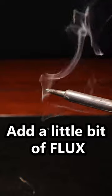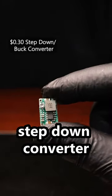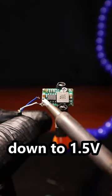Now it's soldering time. Add a little bit of flux. Pre-tin all the solder points. Connect to a step-down converter, which takes 5 volts down to 1.5 volts.